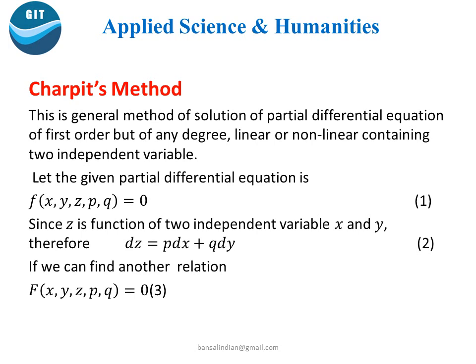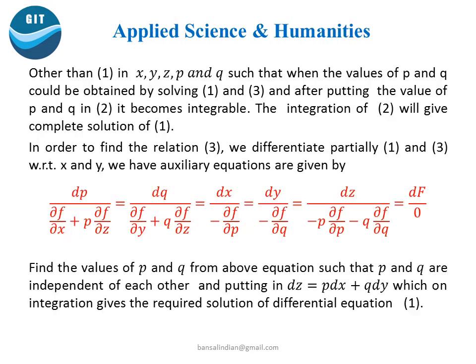If we can find another relation F(x, y, z, p, q) = 0, other than equation (1) in x, y, z, p and q, such that the values of p and q can be obtained by solving equations (1) and (3), then on putting the values of p and q in equation (2) and on integrating, we can get the solution of equation (1).